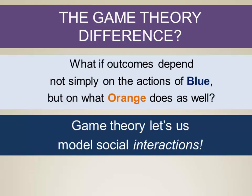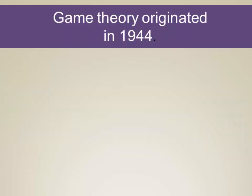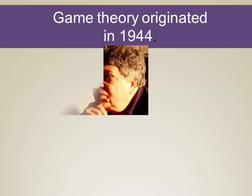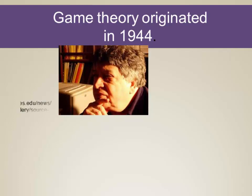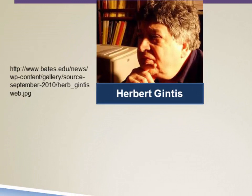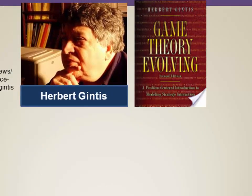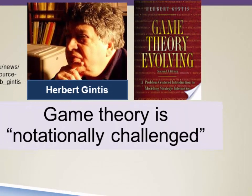Game theory is all about the outcomes of social interactions, when the outcome of what blue does depends upon what orange does, and vice versa. Game theory extends back to 1944, when a couple of economists first published a book on this. A leading economist today named Herbert Gintis — author of a book called Game Theory Evolving — is an evolutionary economist who brings together evolutionary theory with economic theory, and the central focus of his work is on game theory. Gintis stresses that game theory is notationally challenged — you kind of have to go over the game, much as you would when you're learning to play a game.